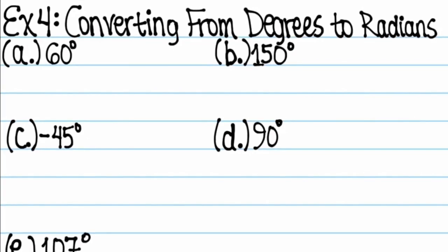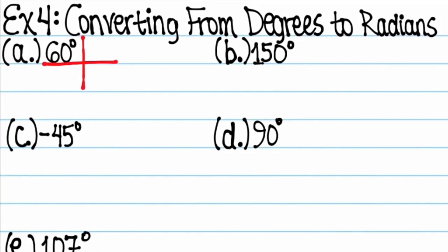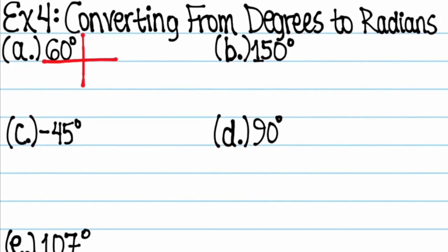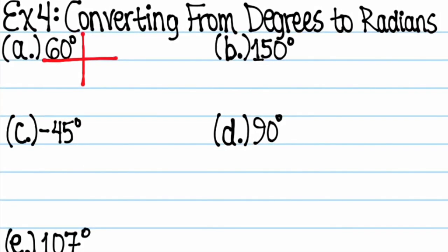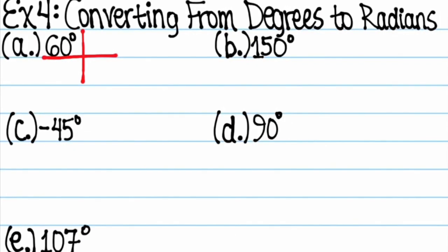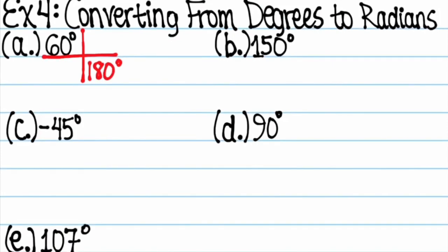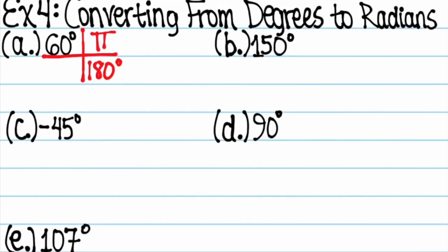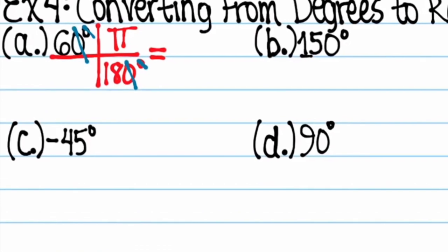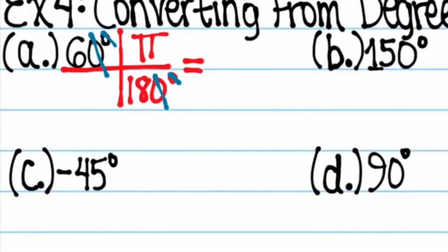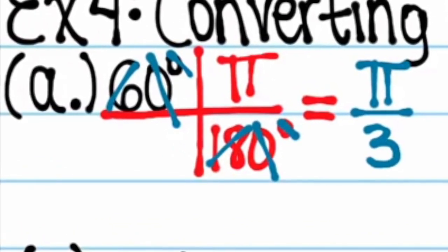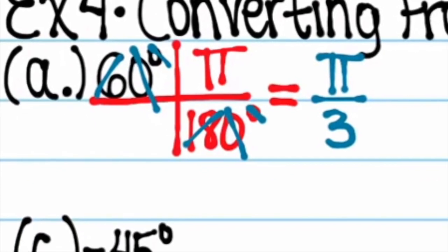60 degrees needs to be converted to radians. That means degrees needs to divide out and radians needs to be left in your answer. We're going to multiply by something where a degree value is in the denominator, and a radian value in the numerator. Pi radians equals 180 degrees. This is our ideal conversion factor. I'm going to cross out the degree symbols and divide by 10. 6 over 18 reduces to 1 over 3, leaving us with pi over 3. 60 degrees is equal to pi over 3 radians.